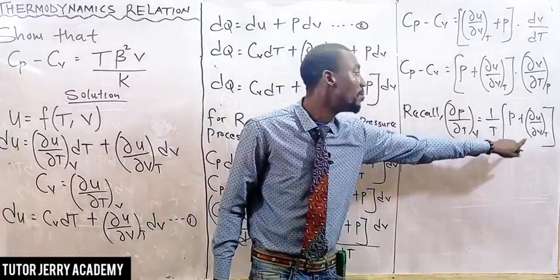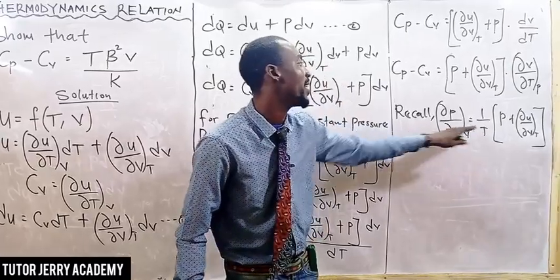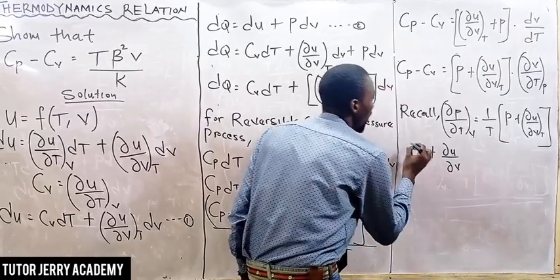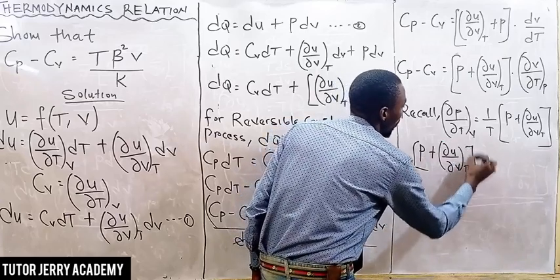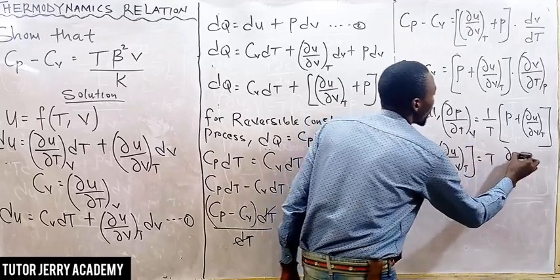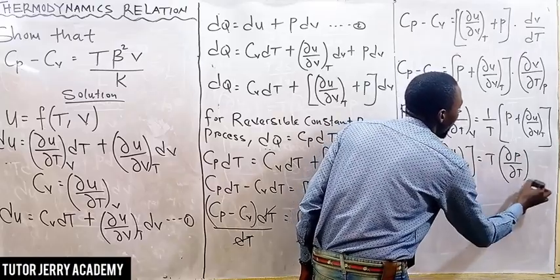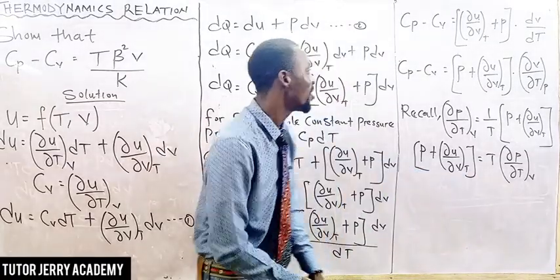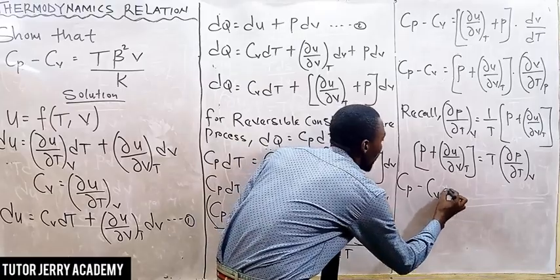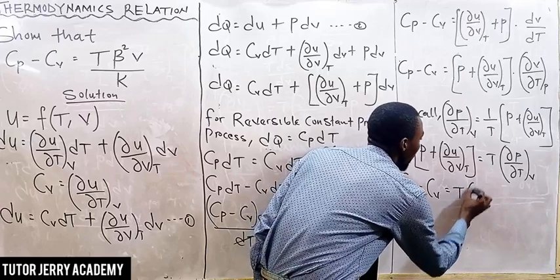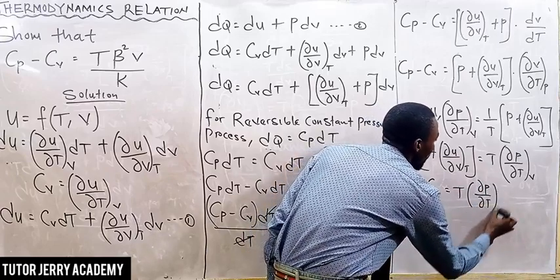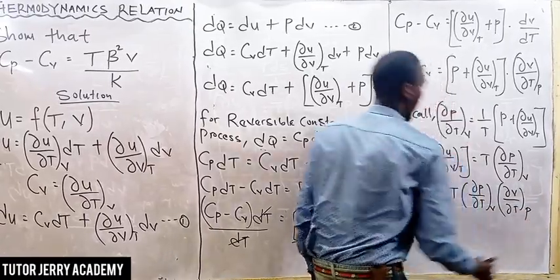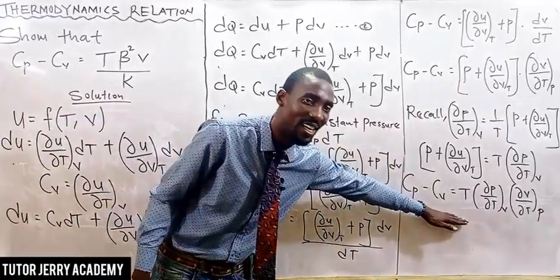Making that expression the subject, we get P plus the partial derivative of u with respect to V, keeping T constant, equals T times the partial differentiation of P with respect to T, keeping V constant. So we can replace that term in our equation. Therefore Cp minus Cv equals T times the partial differentiation of P with respect to T, keeping V constant, multiplied by the partial differentiation of V with respect to P, keeping P constant.